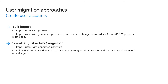The bulk import process involves reading user profiles from an existing identity provider and creating new accounts in the Azure AD B2C directory using the Microsoft Graph API. Use bulk import when you have access to user plain-text credentials such as username and password, or when credentials are encrypted but you can decrypt them and import them into the Azure AD B2C directory. You can also import users with generated passwords and force them to change the password using the Azure AD B2C password reset policy. If that is not acceptable, you can use seamless migration.